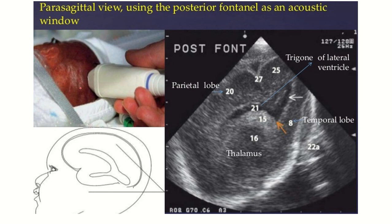The posterior fontanelle closes at the age of 6 to 8 weeks, and delayed closure indicates congenital hypothyroidism. The posterior fontanelle is used as an acoustic window for sonography and this part of the brain is visualized through this area.